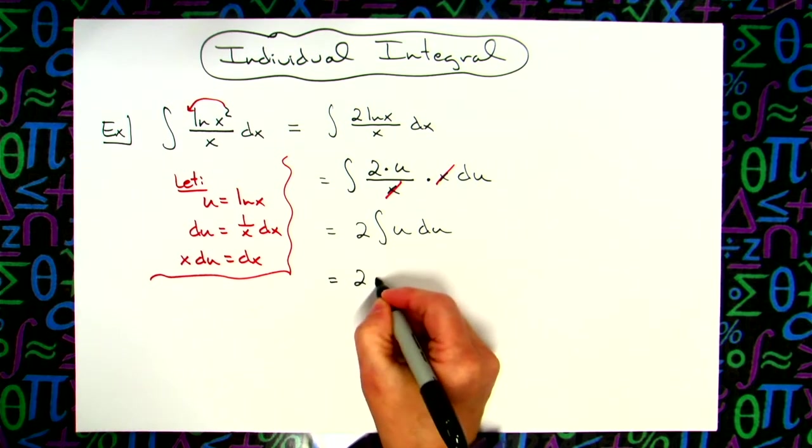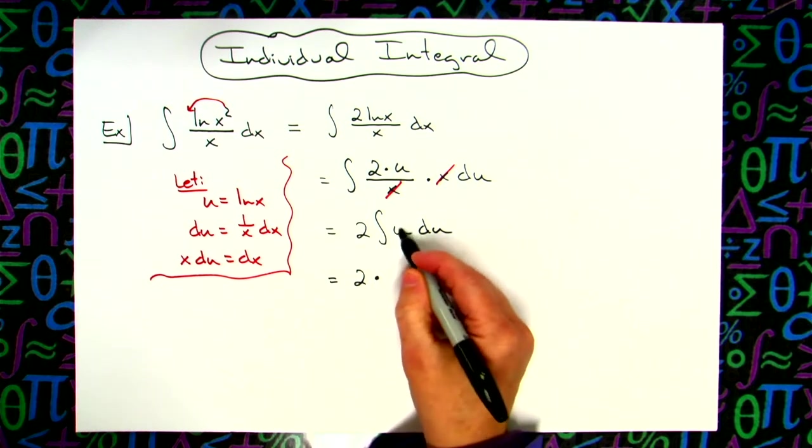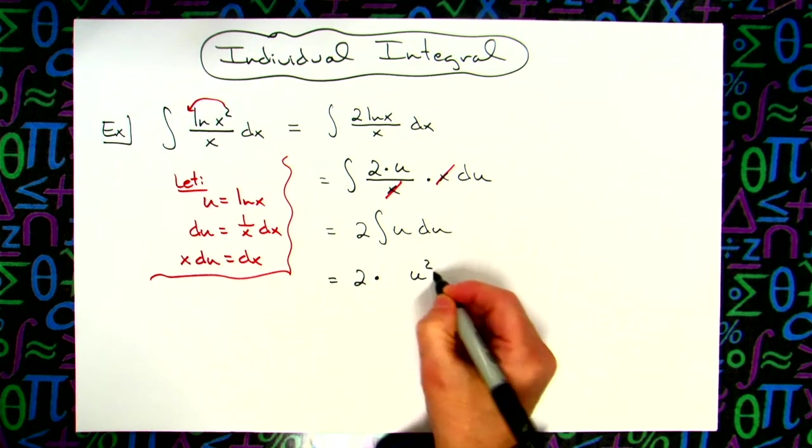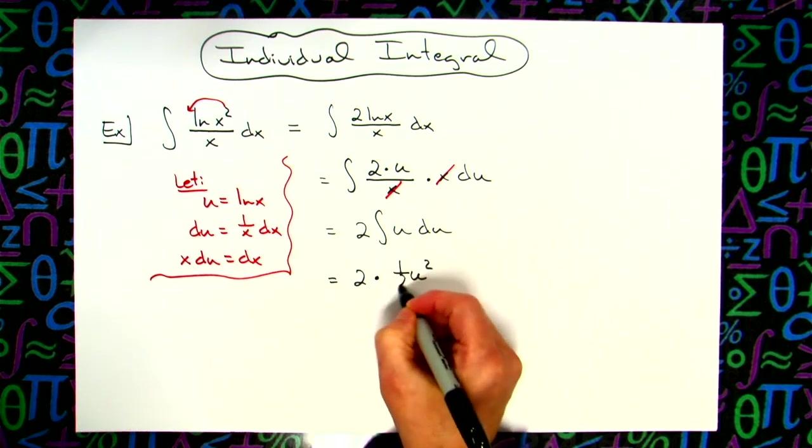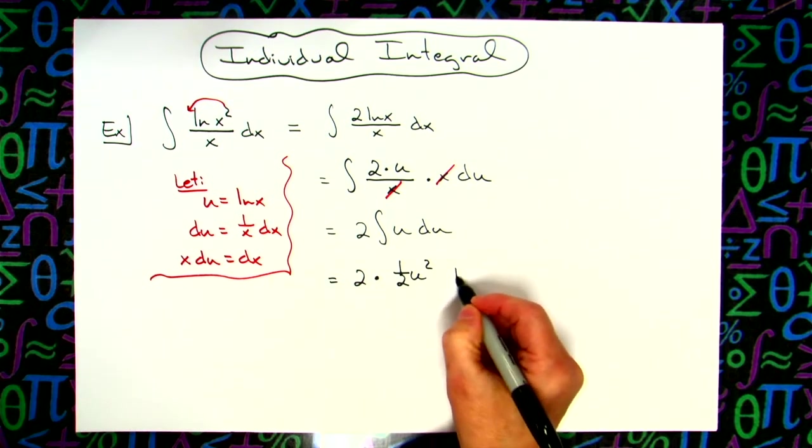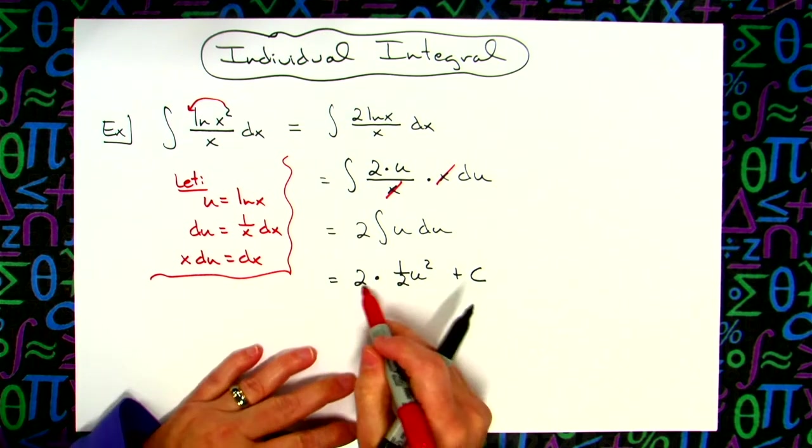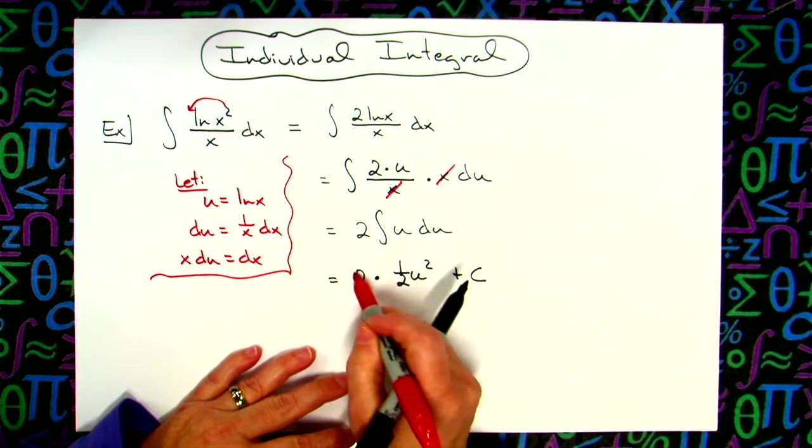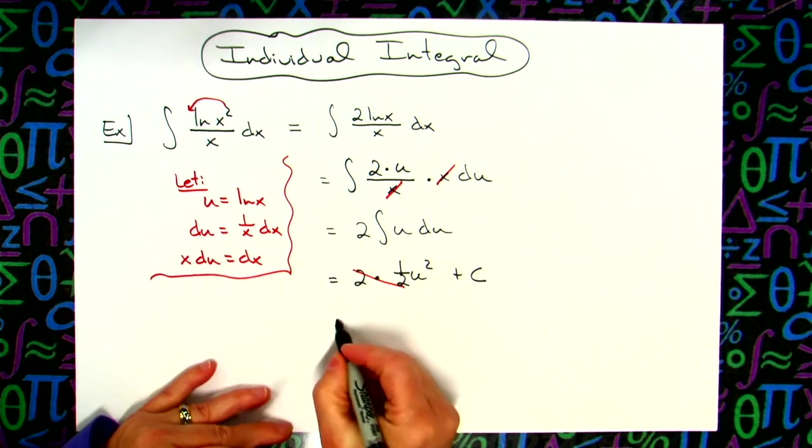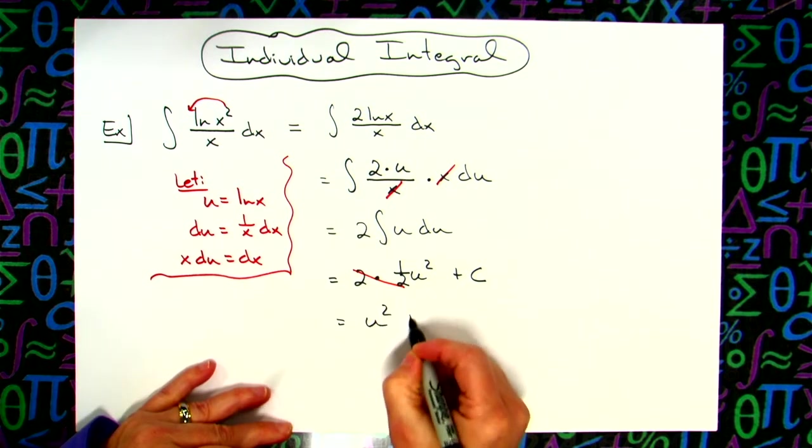I'll have the 2 that is in the front. When I integrate here I'll add 1 to that exponent. I'll have u squared in front. Then I will have 1 half. We can go ahead and add that plus c because we're done with our integration. Now it's a matter of simplifying. 2 times 1 half is going to cross out. So I'll simply have u squared plus c.